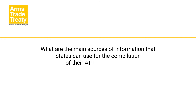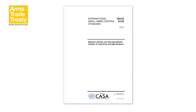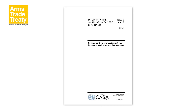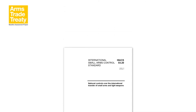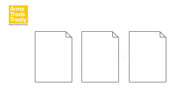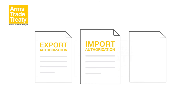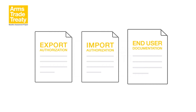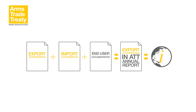The ATT does not explicitly identify the types of documents to be used as sources of information for records and reporting. However, the International Small Arms Control Standard (ISACS) module for international transfers provides some guidance on the types of documents and information that could be useful for states parties to maintain. Three documents are identified as sources of information that states could collate to provide information on export authorizations for their ATT annual report: first, an export authorization, a license or permit; second, an import authorization; and third, end user documentation — that is, an end user certificate or end user statement.